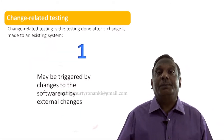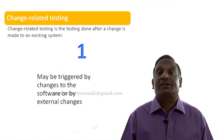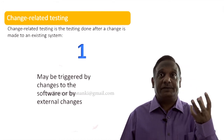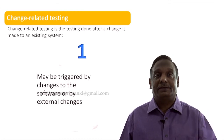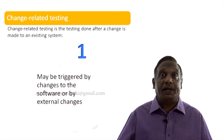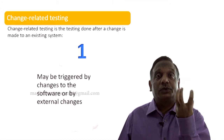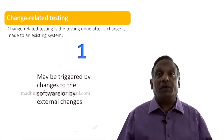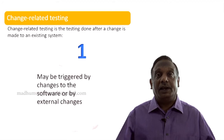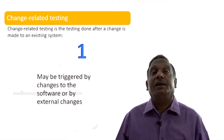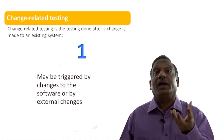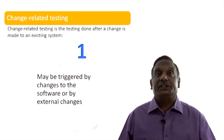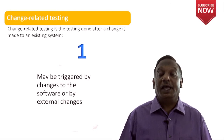Change related testing is often triggered by changes to the software or by external changes. A software can undergo change for many reasons: a bug fix, a planned release, a planned enhancement, or sometimes unplanned enhancements to the software. Not only that, a software always runs in its own environment — on an operating system, on hardware, on a particular database. Sometimes the software may not change, but the environment might change. Even then, you have to perform these change related testing types — retesting and regression testing.